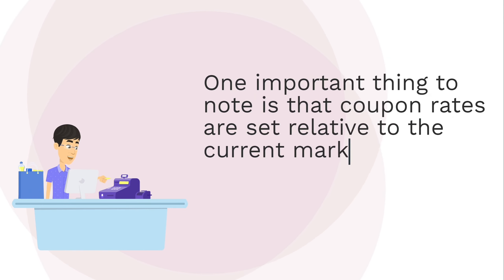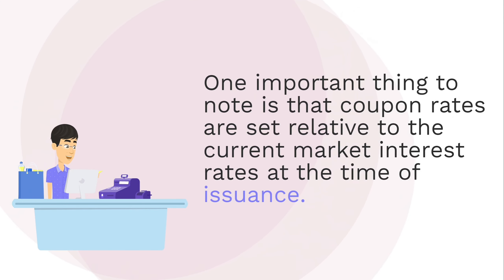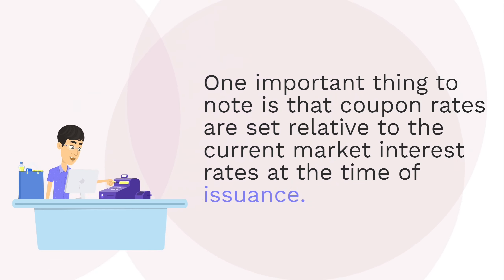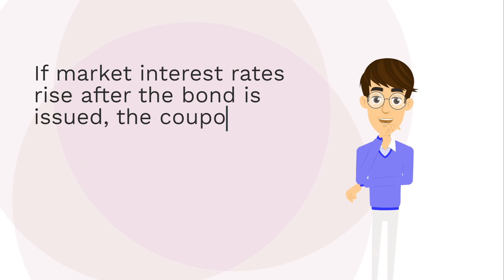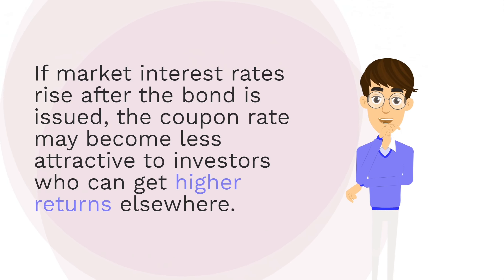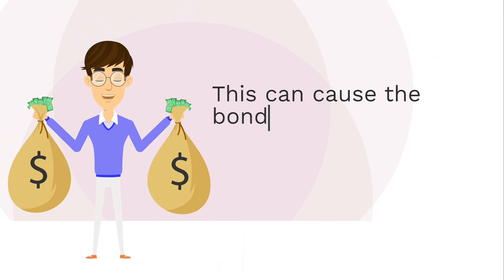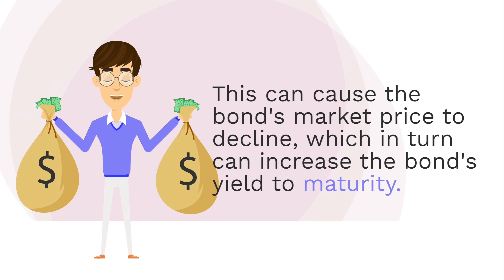One important thing to note is that coupon rates are set relative to the current market interest rates at the time of issuance. If market interest rates rise after the bond is issued, the coupon rate may become less attractive to investors who can get higher returns elsewhere. This can cause the bond's market price to decline, which in turn can increase the bond's yield to maturity.